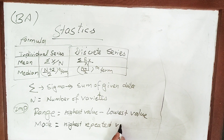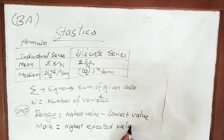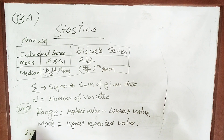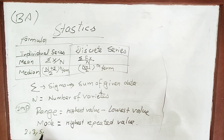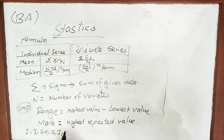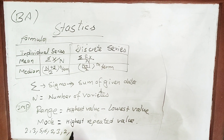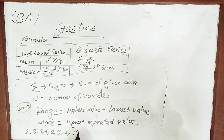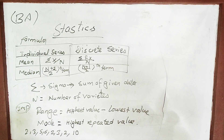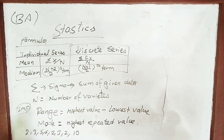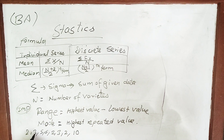Repeat value. Suppose: 2, 3, 5, 6, 2, 3, 3, 2, and 10. This mode is not a case of repeated times.